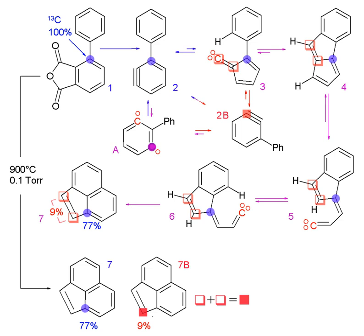Some of the most common stable isotopes are 2H, 13C, and 15N, which can further be produced into NMR solvents, amino acids, nucleic acids, lipids, common metabolites, and cell growth media.